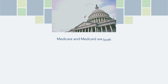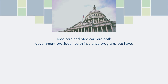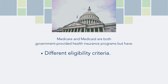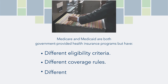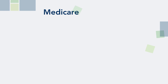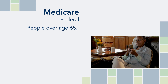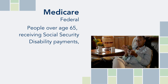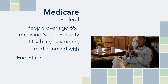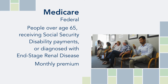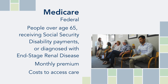Medicare and Medicaid are both government-provided health insurance programs, but they differ in eligibility criteria, coverage rules, and administrative processes. Medicare is a federal program that pays for medical care for people who are over the age of 65, receive Social Security disability payments, or have been diagnosed with end-stage renal disease. Most people pay a monthly premium for Medicare, and there are costs to access care, like deductibles, coinsurances, and co-pays.